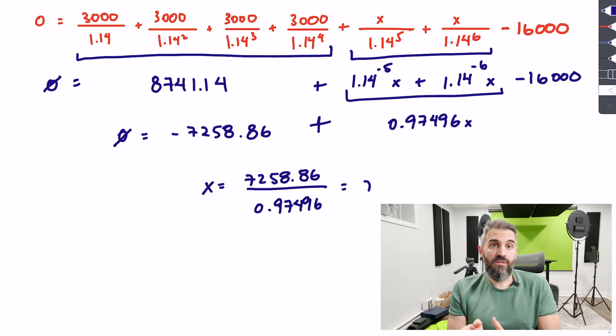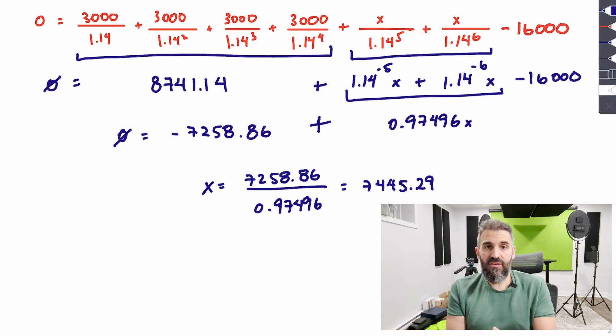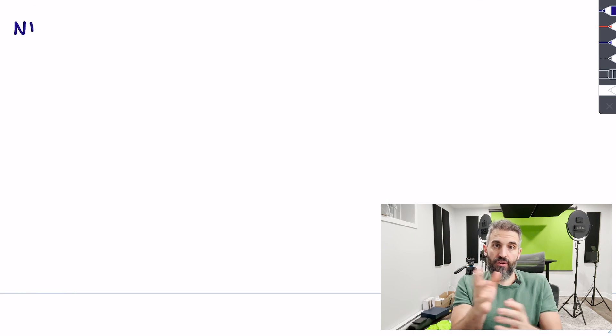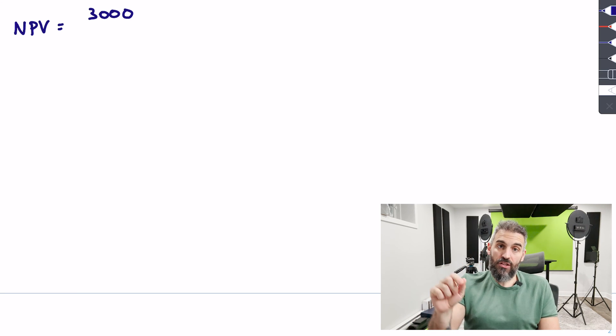So we see here that those two unknown values in years 5 and 6 are actually $7,445. Now that I have that information, the question is basically solved. We're going to punch this into either the formula or your financial calculator. I'm going to show both ways to calculate your net present value, this time using the actual discount rate, which is 10%.